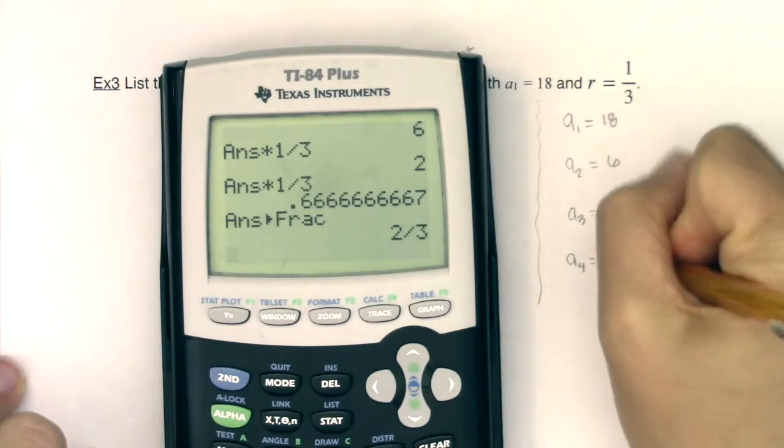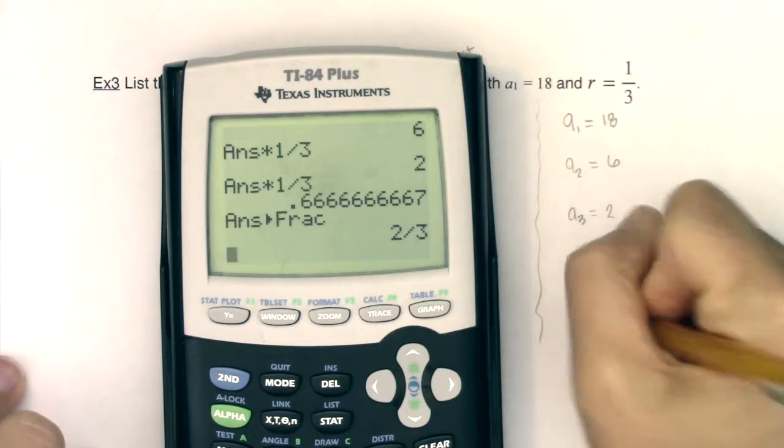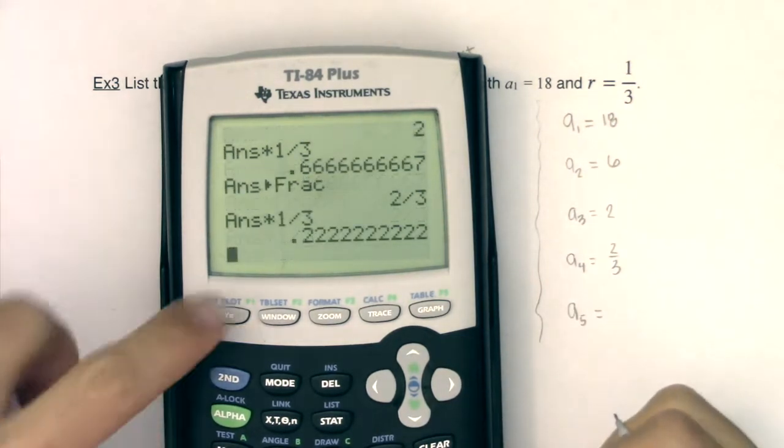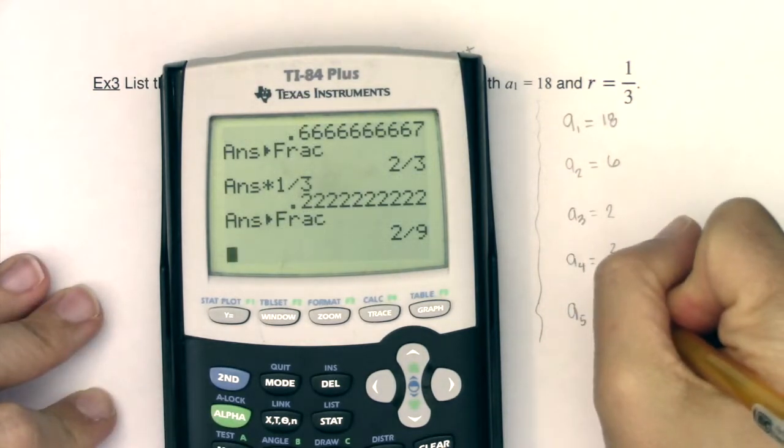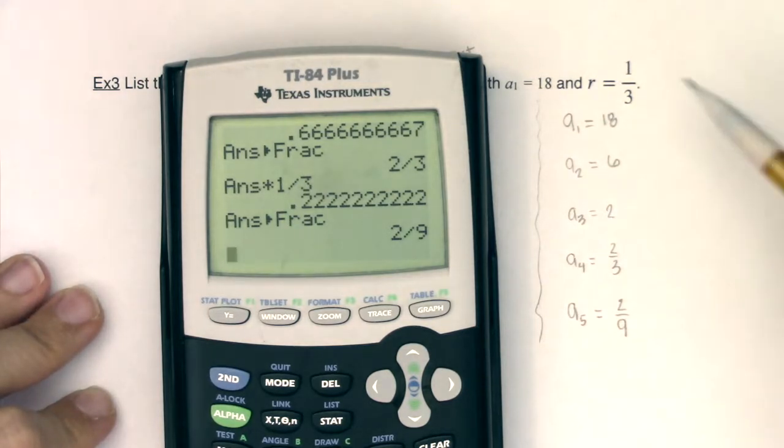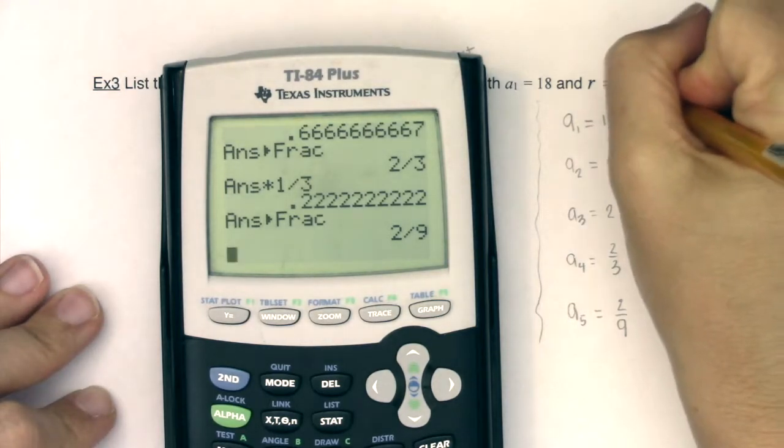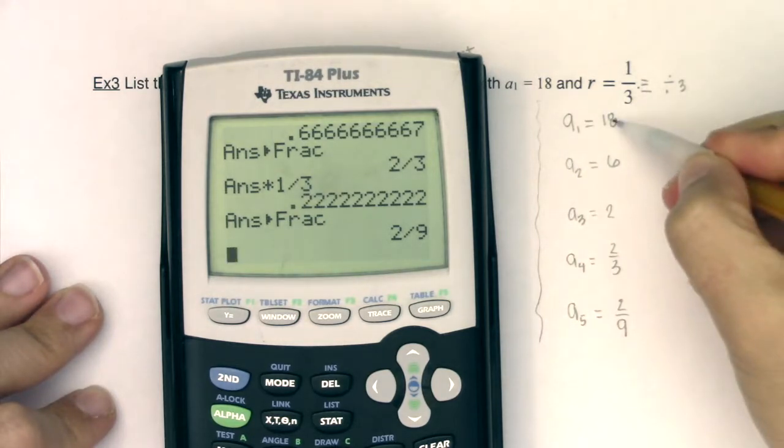And then again, if I multiply this number by 1/3, I would get 0.222, which is 2/9. And there's the first five terms in my sequence. And I just want to say, right? Multiplying by 1/3 is the same thing as dividing by 3.